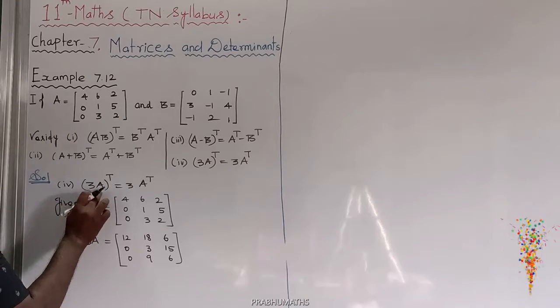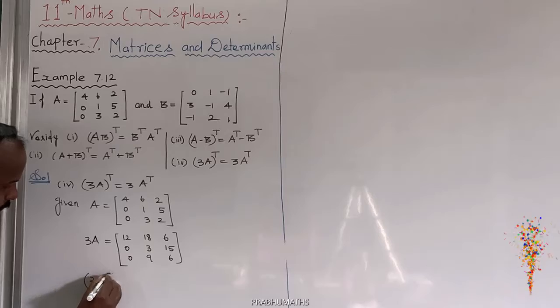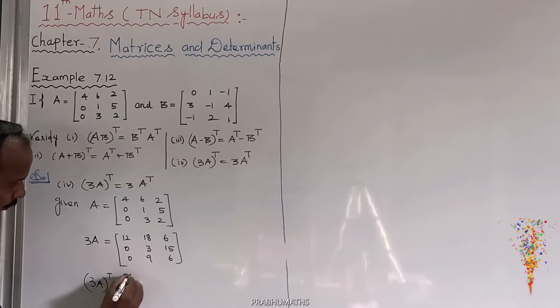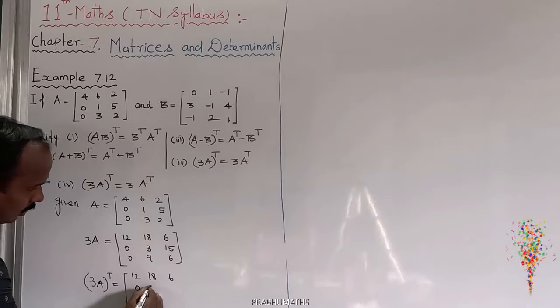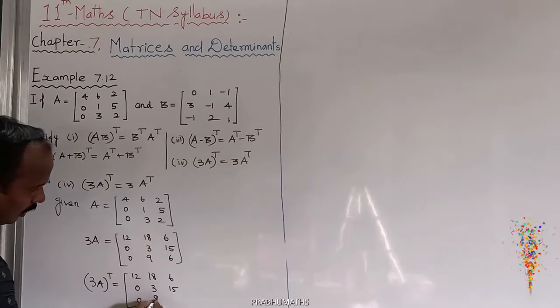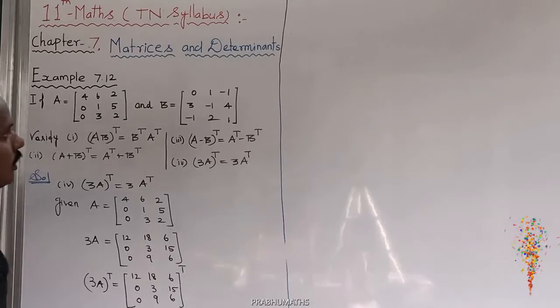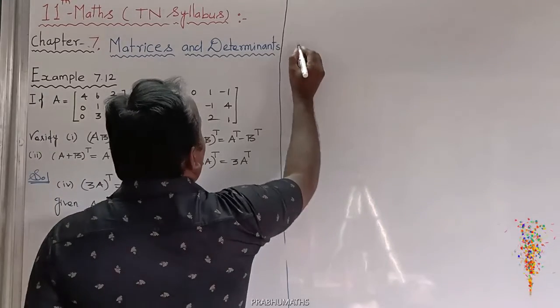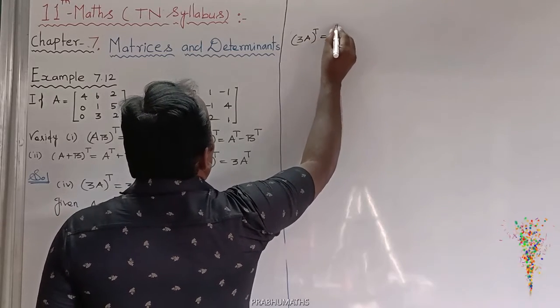Next is going to find 3A the whole transpose. So 3A the whole transpose is equal to: 12, 18, 6, 0, 3, 15, 0, 9, 6, the whole transpose. So 3A transpose is equal to 3A the whole transpose that is equal to: